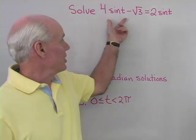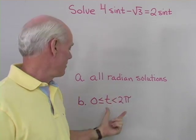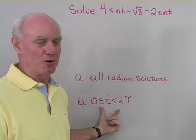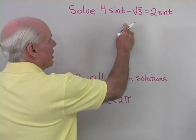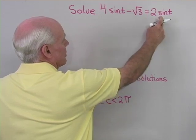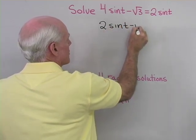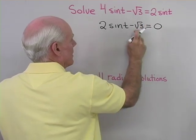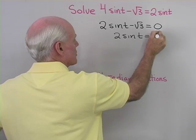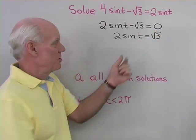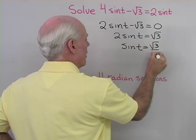Here we have another equation: 4 sin t minus square root 3 equals 2 sin t. I want to find all radian solutions and just the radian solutions between 0 and 2 pi, including 0 but not including 2 pi. I'll add negative 2 sin t to both sides to get 2 sin t minus square root 3 equals 0. Adding square root 3 to both sides gives 2 sin t equals square root 3, then dividing by 2 gives sin t equals square root 3 over 2.